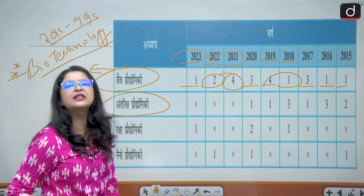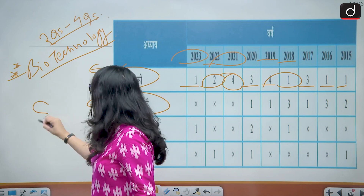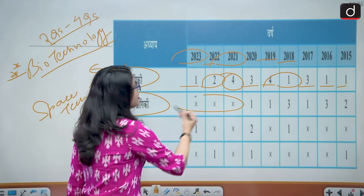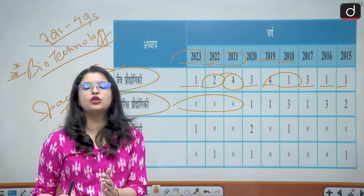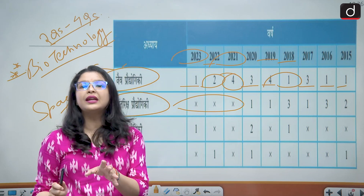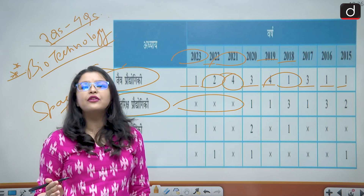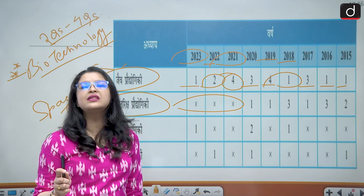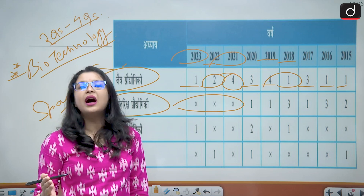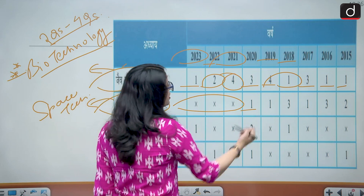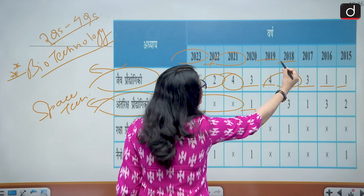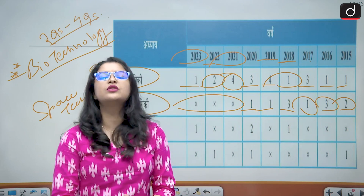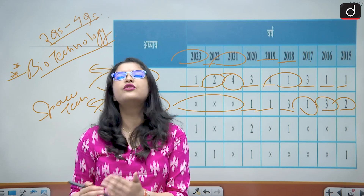The second topic is space technology. In the last three years, no questions have been asked from this topic. But given space technology is currently very much in the news, I would say prepare and revise this topic, because since it has not been asked for three years, this increases the probability of it being asked in your 2024 examinations. Previously: 2021 one question, 2019 one question, 2018 three questions, 2017 one, and then three and two questions. You can expect a minimum of one question, going up to three if there is a reversal of trend.